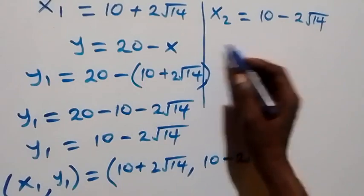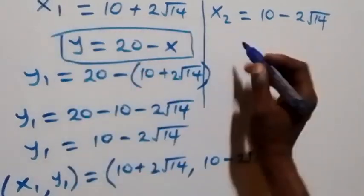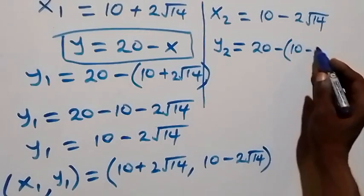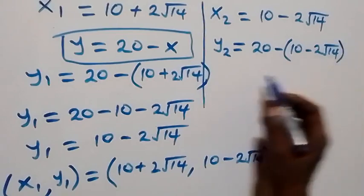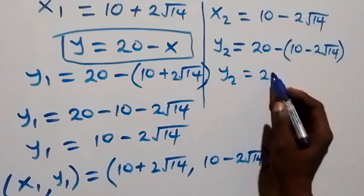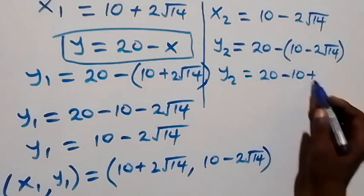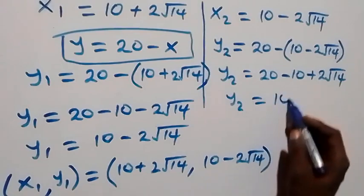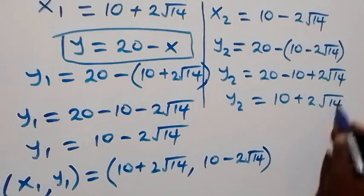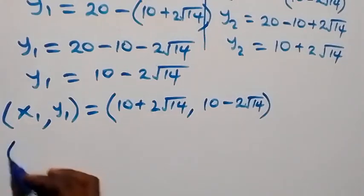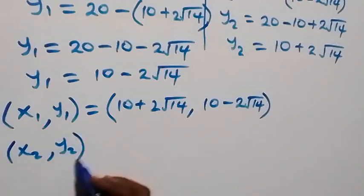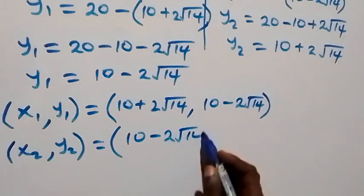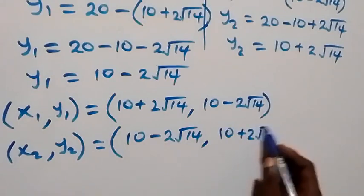For y₂, using the same relation: y₂ equals to 20 minus x₂, which is 20 minus (10 minus 2 root 14). This gives y₂ equals to 20 minus 10 plus 2 root 14, so y₂ equals to 10 plus 2 root 14. The second solution pair (x₂, y₂) is (10 minus 2 root 14, 10 plus 2 root 14).